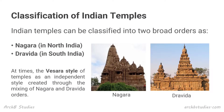Here comes the classification of Indian temples. Indian temples are classified in two categories: one is Nagara and second is Dravida. Nagara is the temple architecture style of North India and Dravida is the temple architecture style of South India.